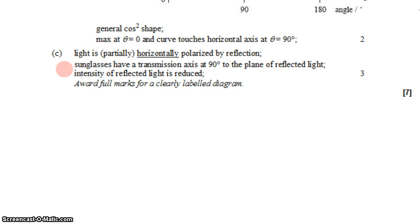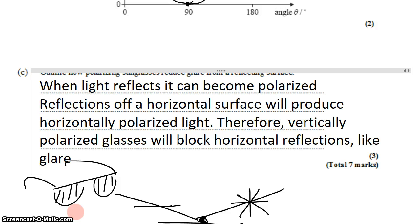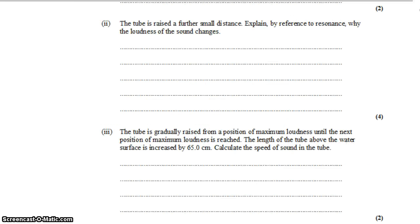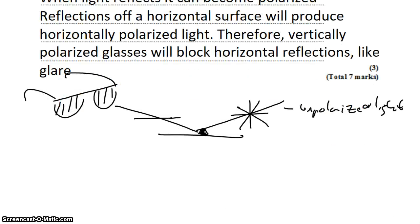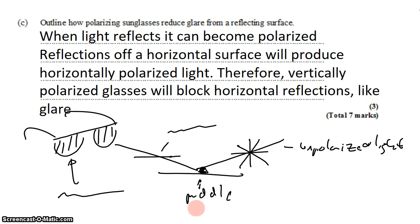Looking at the mark scheme for Part C, we see those same points in the answer — but also this: full marks are available for a clearly labeled diagram. So coming back to my answer, the diagram I drew to help explain the concept could itself earn full marks if properly labeled — for example, labeling unpolarized light, the reflective surface or puddle, the polarized reflected light, and the vertically polarized sunglasses. In most explain questions, diagrams aren't explicitly awarded points, but they can help you understand and sometimes earn credit.